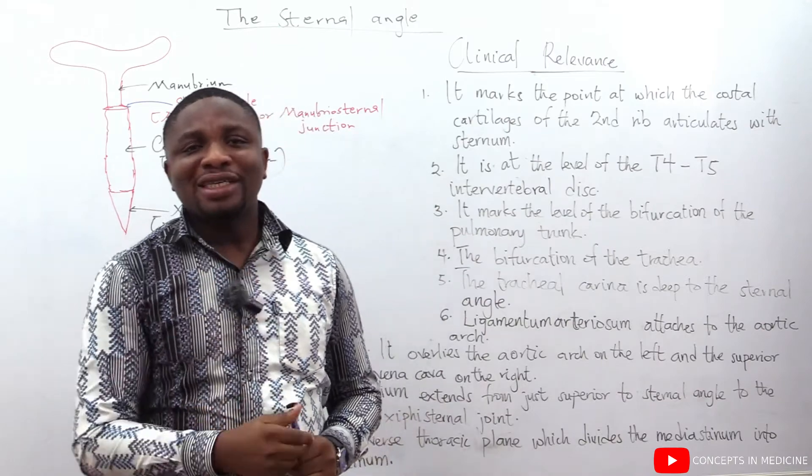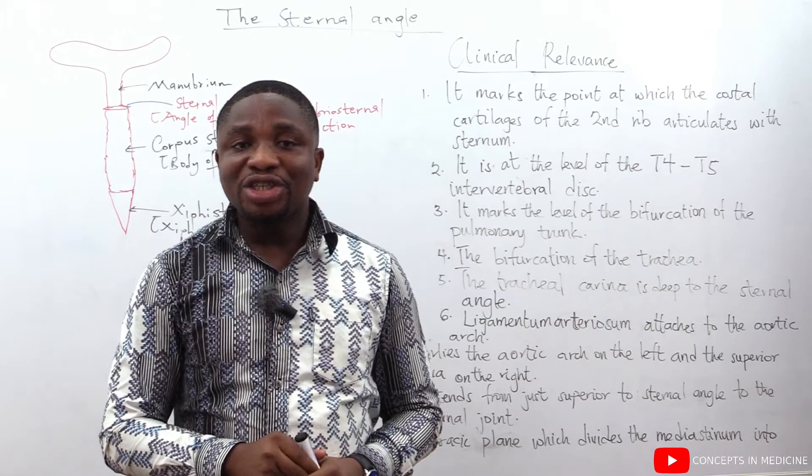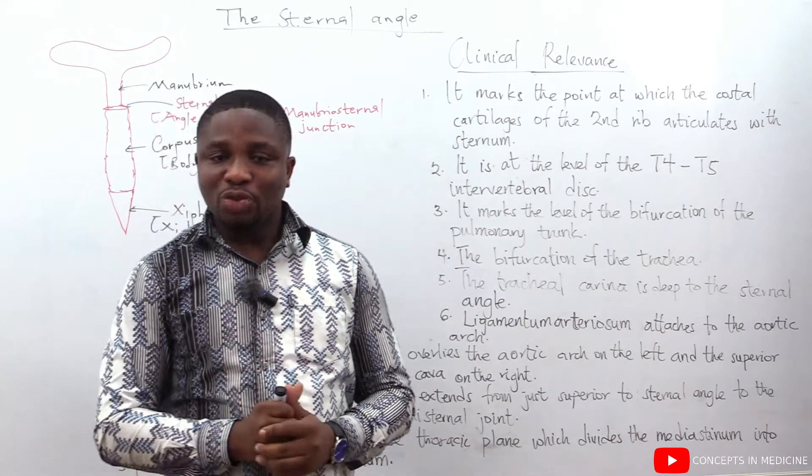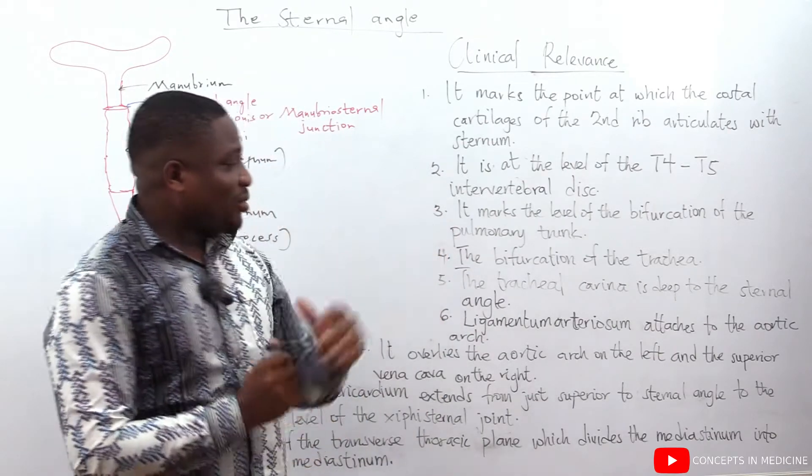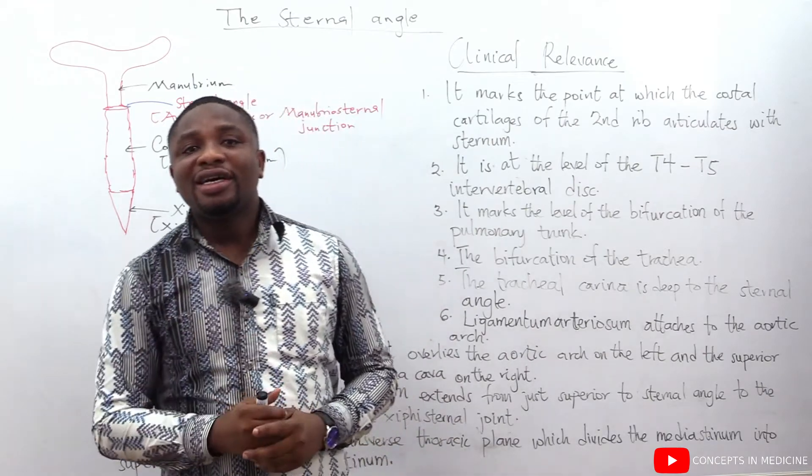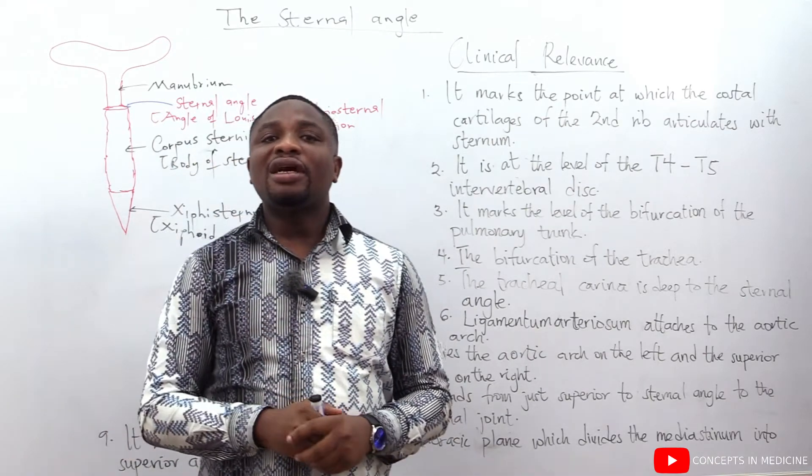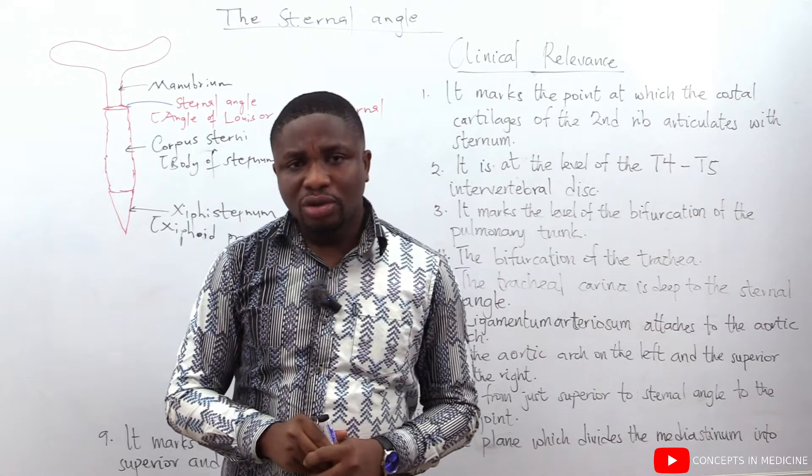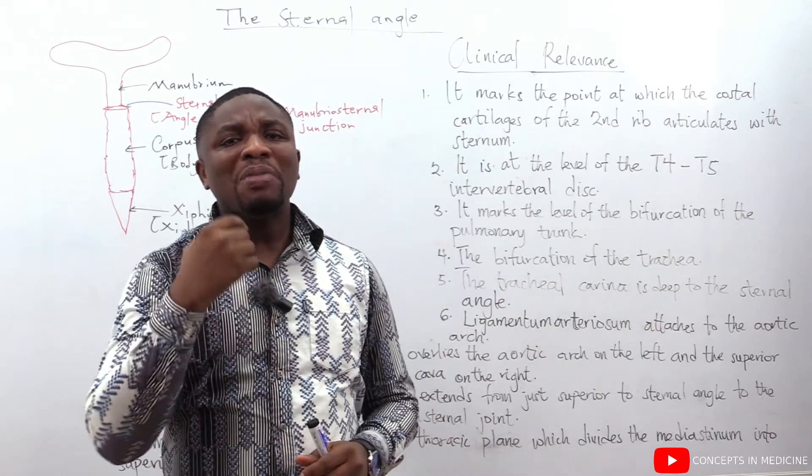The next one, it also marks the level of the bifurcation of the trachea as well. The next one we want to talk about is the tracheal carina. The tracheal carina is deep to the sternal angle and also you should know that the sternal angle also marks the level.